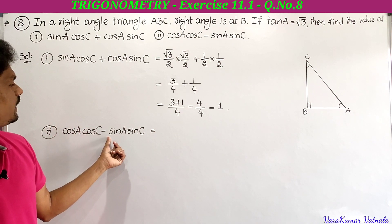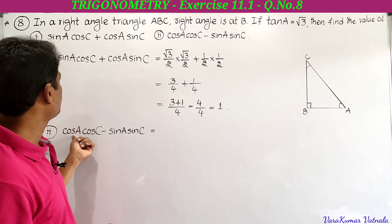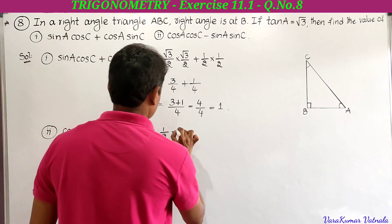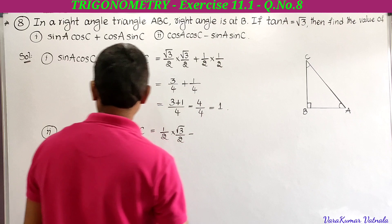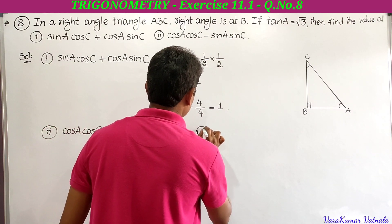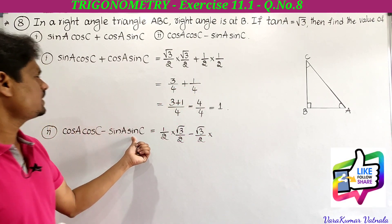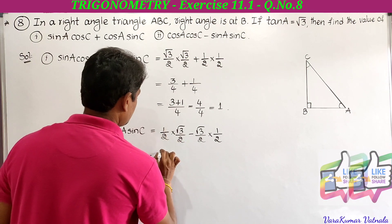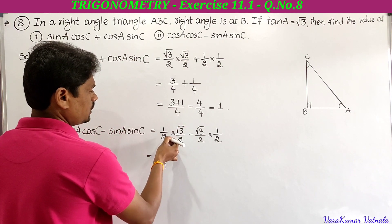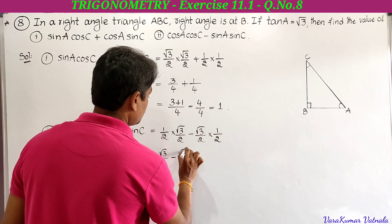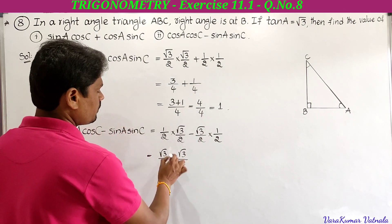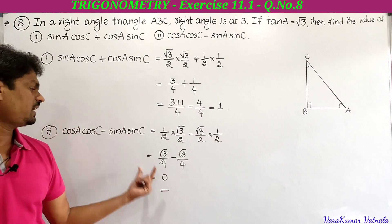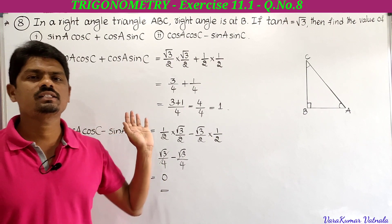For the second bit, cos A cos C minus sin A sin C: cos A is 1 by 2, cos C is root 3 by 2, sin A is root 3 by 2, and sin C is 1 by 2. Calculating: (1 by 2)(root 3 by 2) minus (root 3 by 2)(1 by 2), which gives root 3 by 4 minus root 3 by 4, equal to 0. So cos A cos C minus sin A sin C equals 0. This completes the eighth problem in Exercise 11.1.